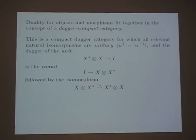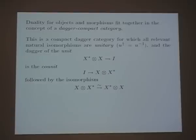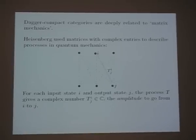When you have both structures, you have a very interesting rich structure called a dagger compact category — it's a dagger category that's also a compact category, with some compatibility conditions. All the relevant structural isomorphisms in the symmetric monoidal category should be unitary, where a unitary morphism in any dagger category is one where the dagger is the inverse. Also, the dagger of a unit should be the co-unit followed by the symmetry that twists the two factors. This has been nicely worked out in papers by Abramsky and Coecke.